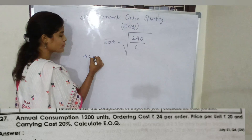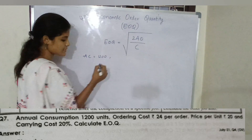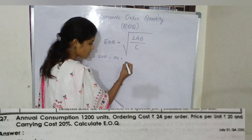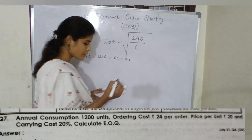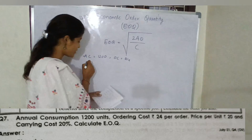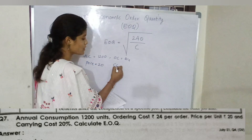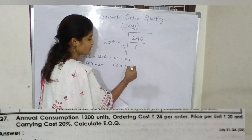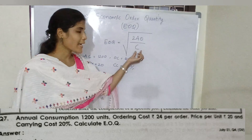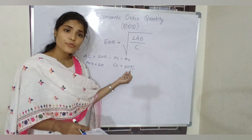In this first example, annual consumption is 1200 units, ordering cost is 24 per order, price per unit is 20 rupees, and carrying cost is 20 percent.